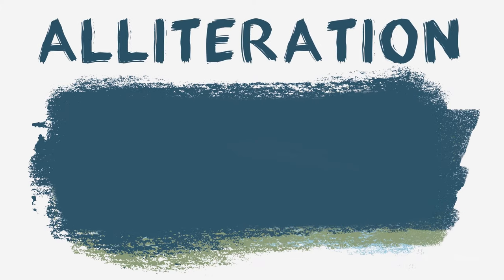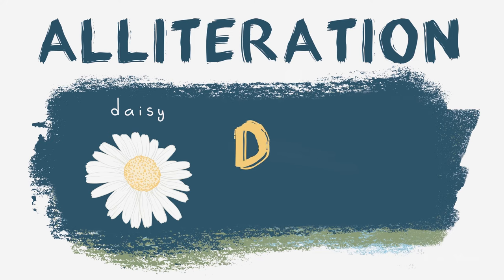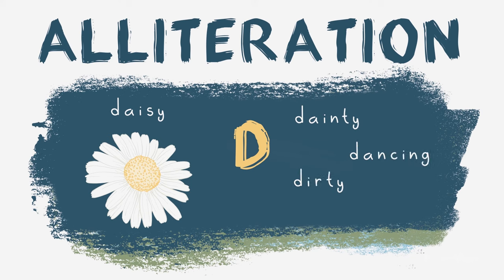Now it's your turn to create alliteration. Choose an object or an animal. What sound does it start with? Make a list of words that start with the same sound. Which words could be used to describe your object?